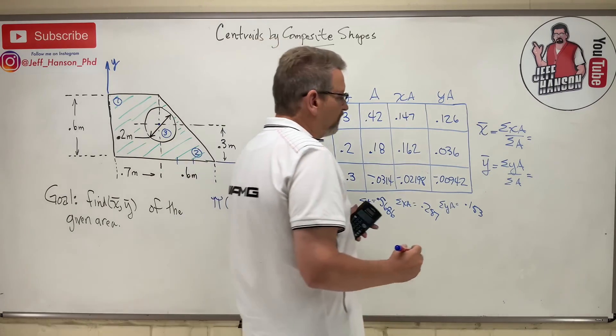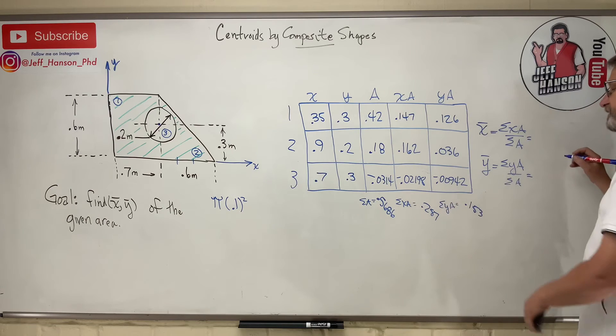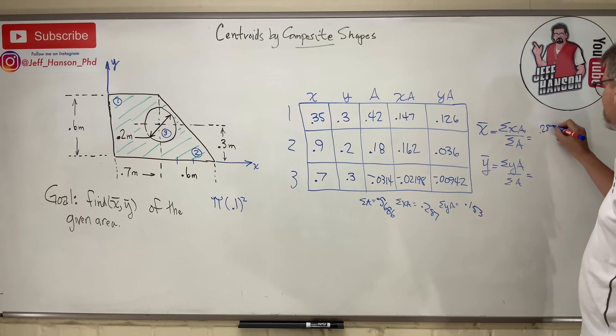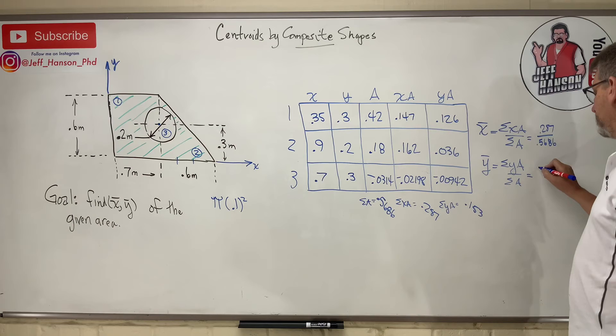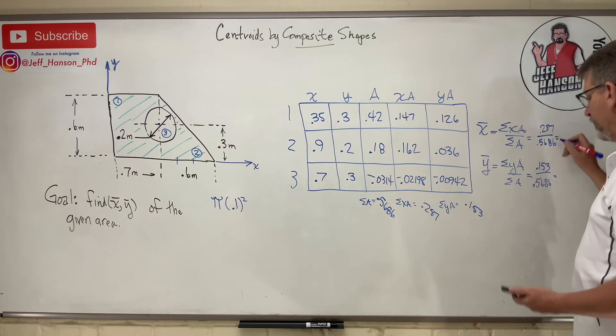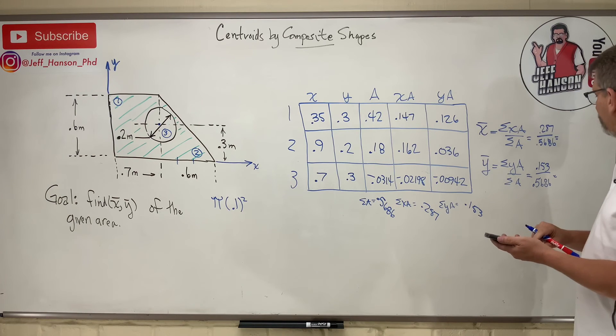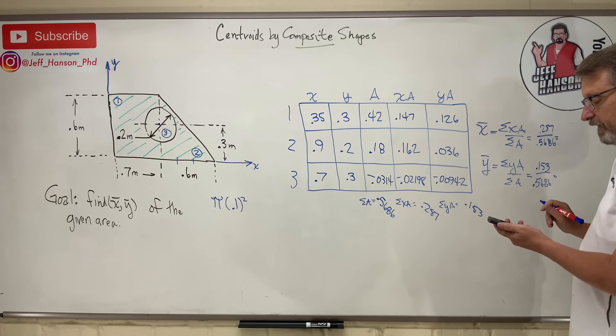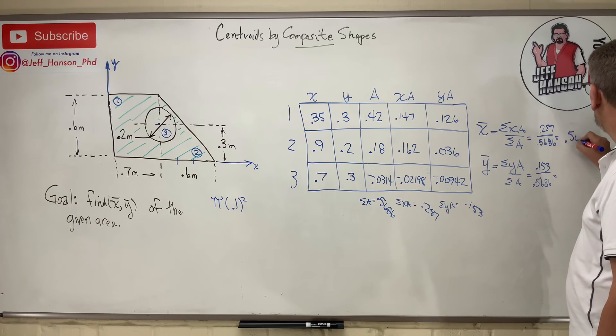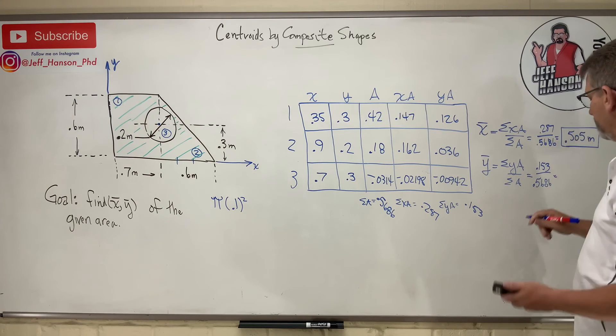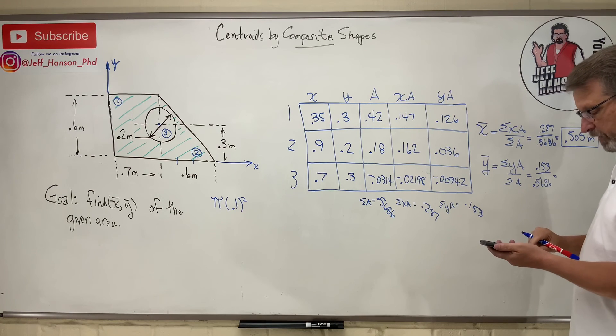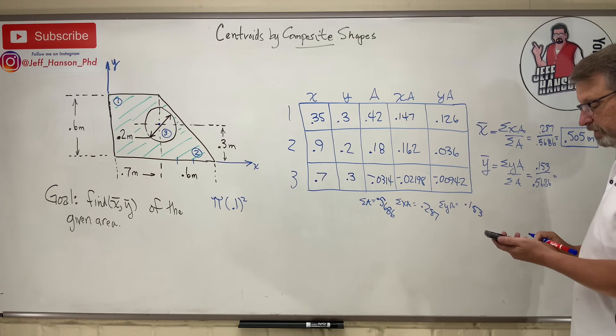Okay, and so here we go. X bar - X bar is the sum of the X·A's, 0.287, divided by 0.5686. And then Y bar is going to be 0.153 divided by 0.5686. We're one calculator away: 0.287 divided by 0.5686 equals 0.505 - and these were in meters, weren't they? There's X bar. And then 0.153 divided by 0.5686 - 0.269. And there is Y bar.